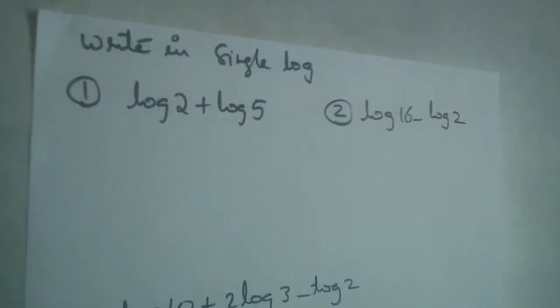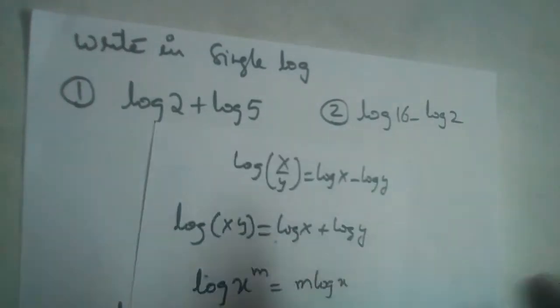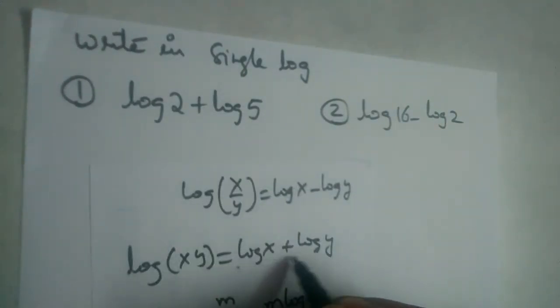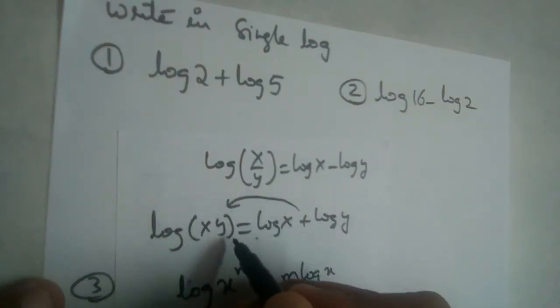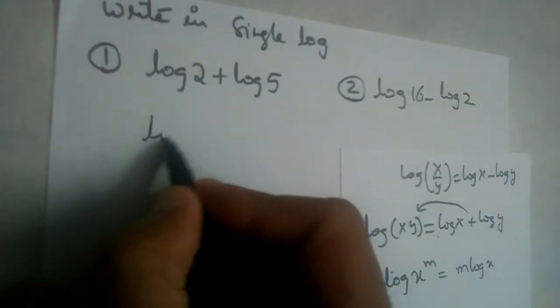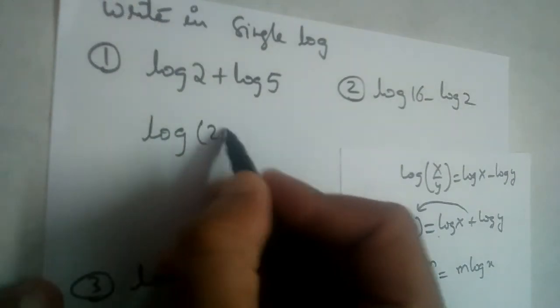So this is log 2 plus log 5. This is log x plus log y form, right? So we can write it in reverse like this: log x into y. So this is log 2 into 5.